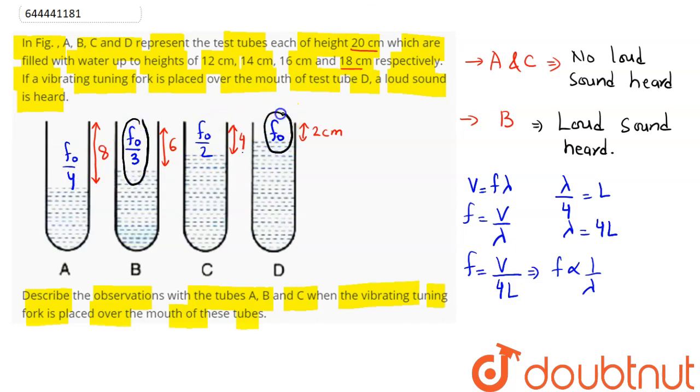Hence we can say the odd harmonics are only present, that is f naught by three and f naught. These are odd harmonics to each other, whereas f naught by four and f naught by two are even harmonics. And we know even harmonics are absent, so f naught by four and f naught by two will not be in resonance with the tuning fork.